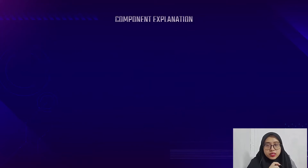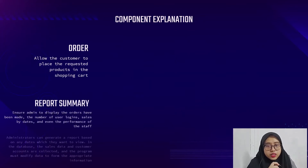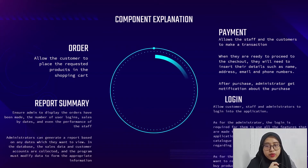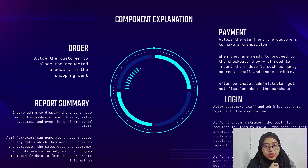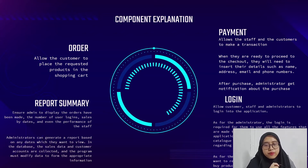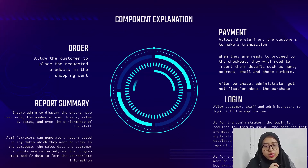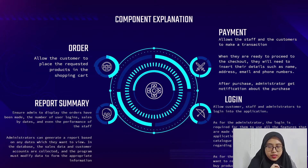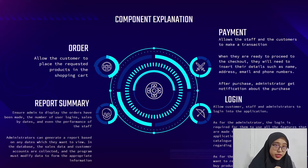The order component allows the customer to place a request through the in-depth shopping cart. The report summary ensures the admin can display orders, number of sales by date, and even the performance of staff. The administration can generate a report based on any dates they wish to view. In the database, sales data and customer accounts are collected and the program must modify data to form the appropriate information.